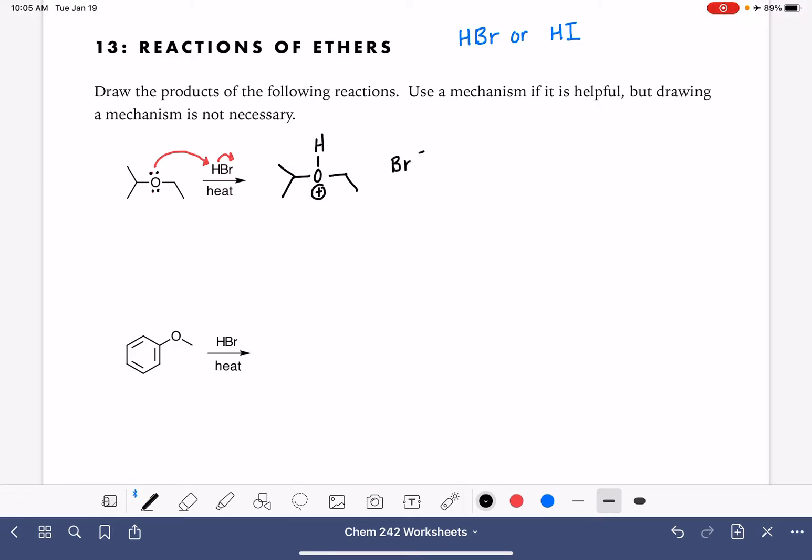Once this step happens, this is kind of like converting an OH group into a good leaving group, getting it ready for an SN2 type reaction. The bromide ion is going to attack one of the carbon atoms attached to the O positive. It doesn't matter which carbon atom we attack. This is going to be an SN2 reaction. I'm just going to choose this carbon atom because it's on the same side of the molecule as the bromine.